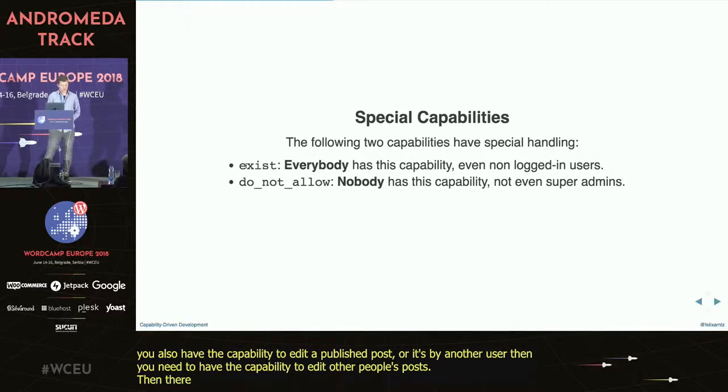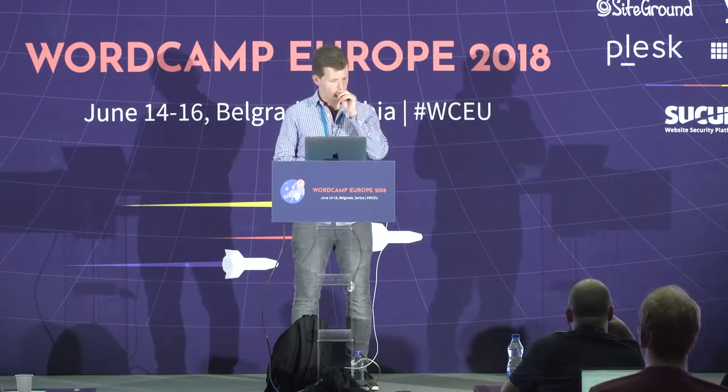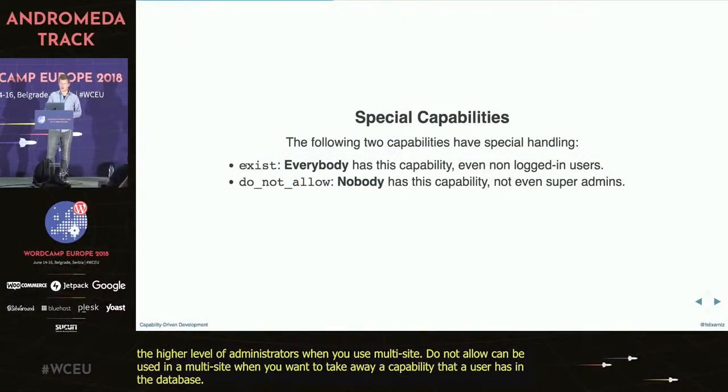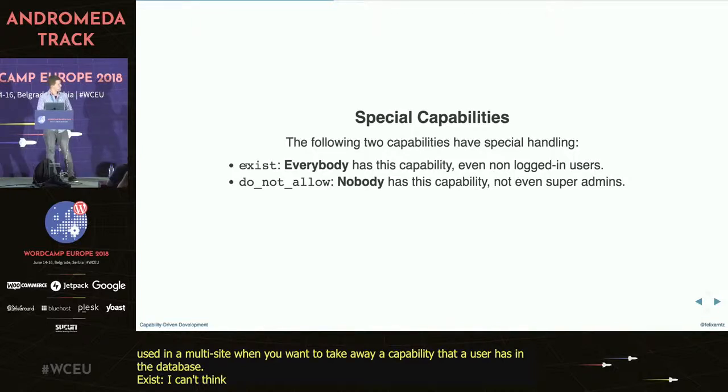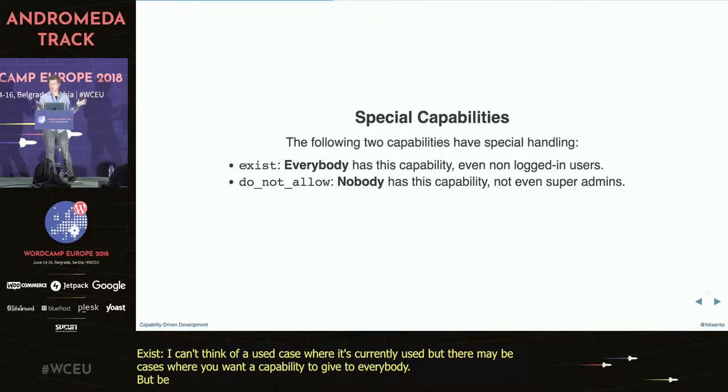Last but not least, there are two very special capabilities. exist is a capability that everybody, by definition, has. The contrary is do_not_allow, which is a capability that nobody has — not even super admins, who are the higher level of administrators when you use multi-site. do_not_allow can be useful in a multi-site when you want to take away a capability that a user actually has in the database. Be careful though — don't map something like manage_options to exist, as that would be a bad idea.